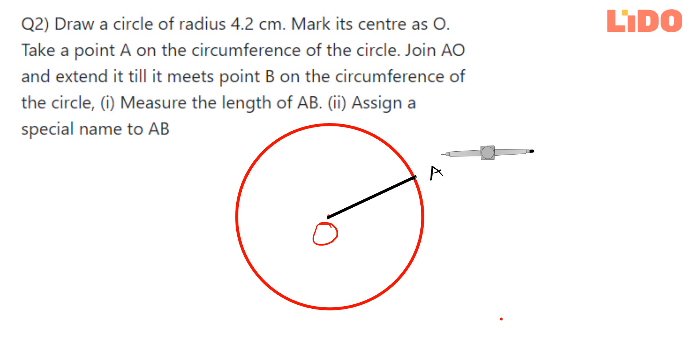I'm going to join this one. Now, AO and extend it till it meets point B on the circumference of the circle. I'm also joining AO and extending it to meet B as well, like this. It should be like this.